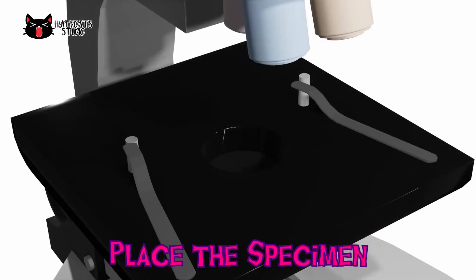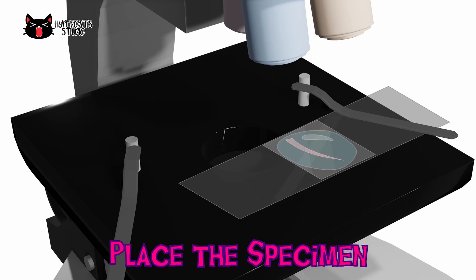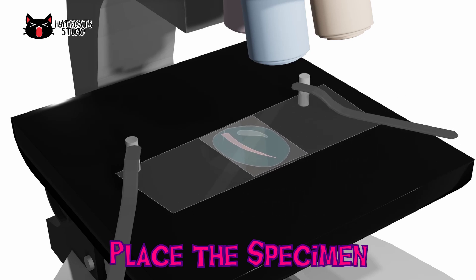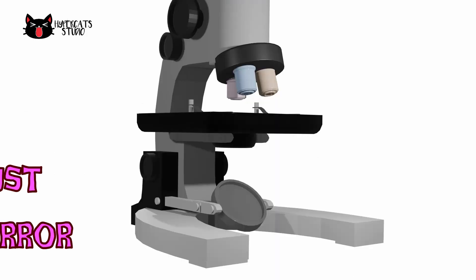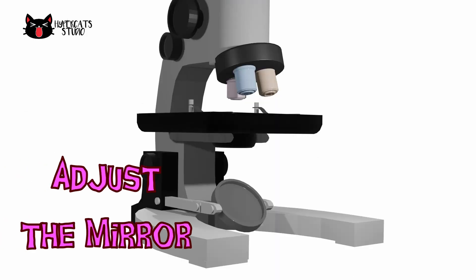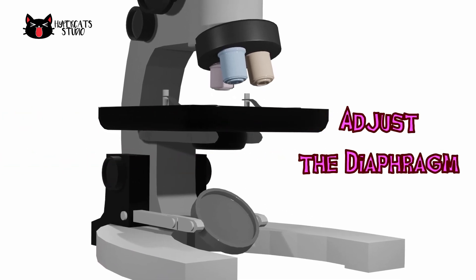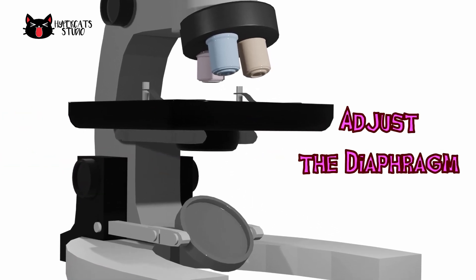Place the glass slide containing the specimen on the stage directly above the center hole and fasten it with stage clips. We are going to use the prepared slide of onion. Look through the eyepiece and adjust the mirror to find the field of view of the microscope. You can also adjust the diaphragm if it is too bright.